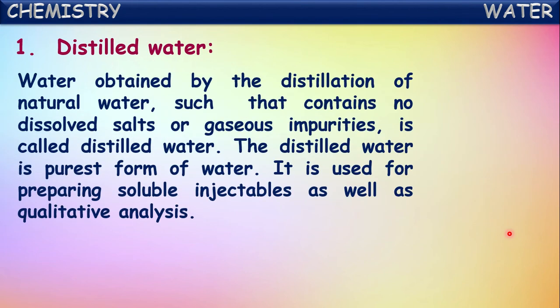Distilled water is water obtained by distillation of natural water such that it contains no dissolved salts, gases, or any other impurities. We can say distilled water is the purest form of water. The purest naturally existing water is rain water, because nature performs a distillation process - water evaporates from water bodies, condenses, and falls as rain, producing pure water.